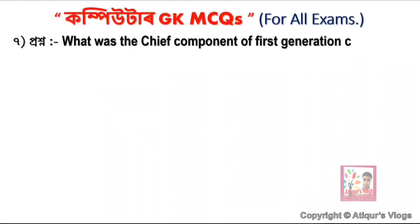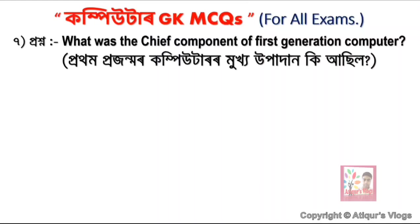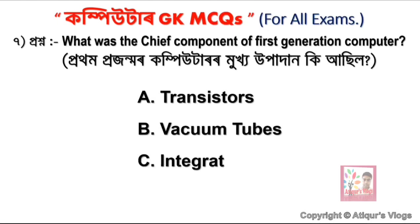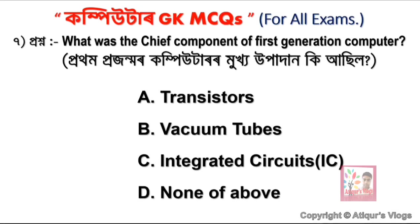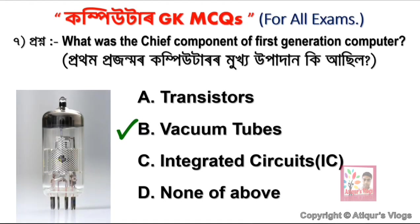The next question asks: what was the chief component of first generation computers? Think about what the main component of the first generation computer was. Option A is Transistor, option B is Vacuum Tubes, option C is Integrated Circuits, and option D is None of the Above. Option B is correct — Vacuum Tubes were the main component of the first generation computer.